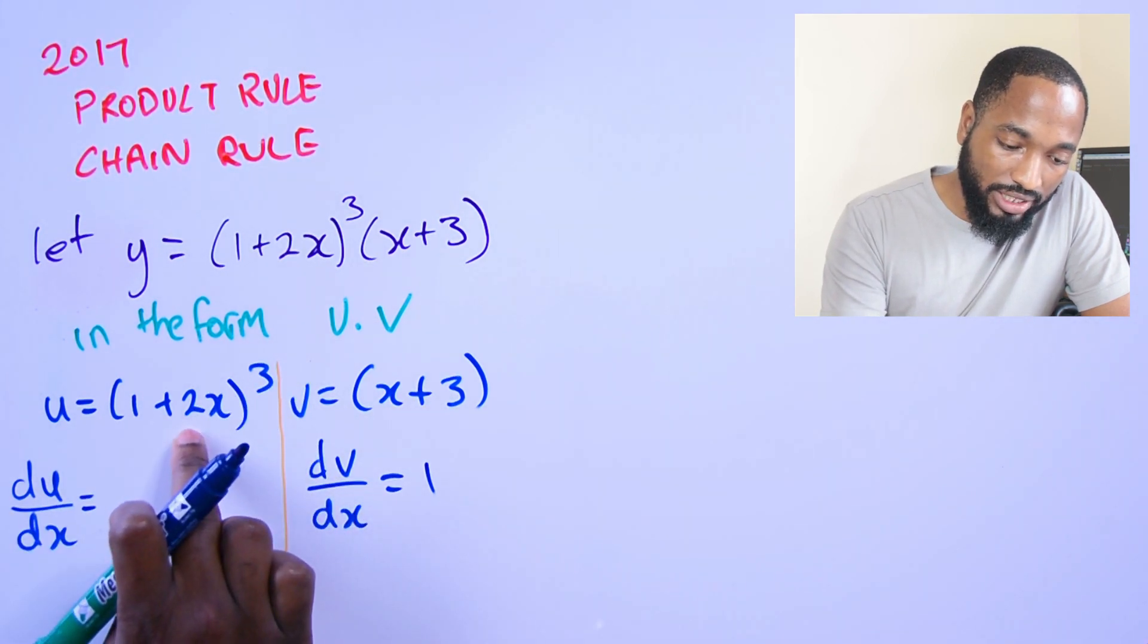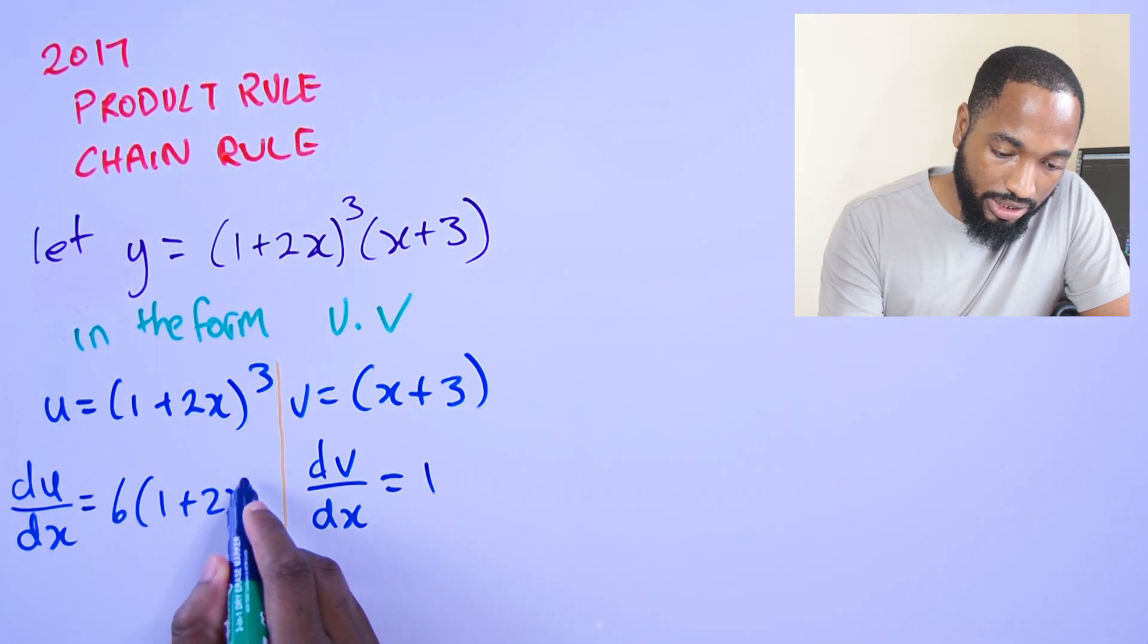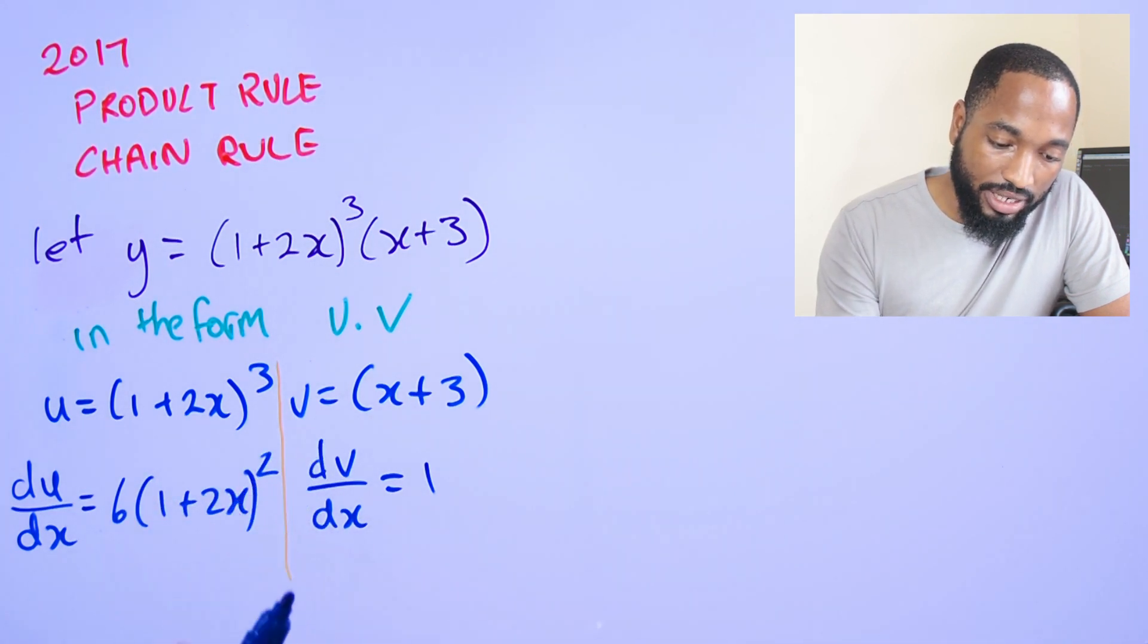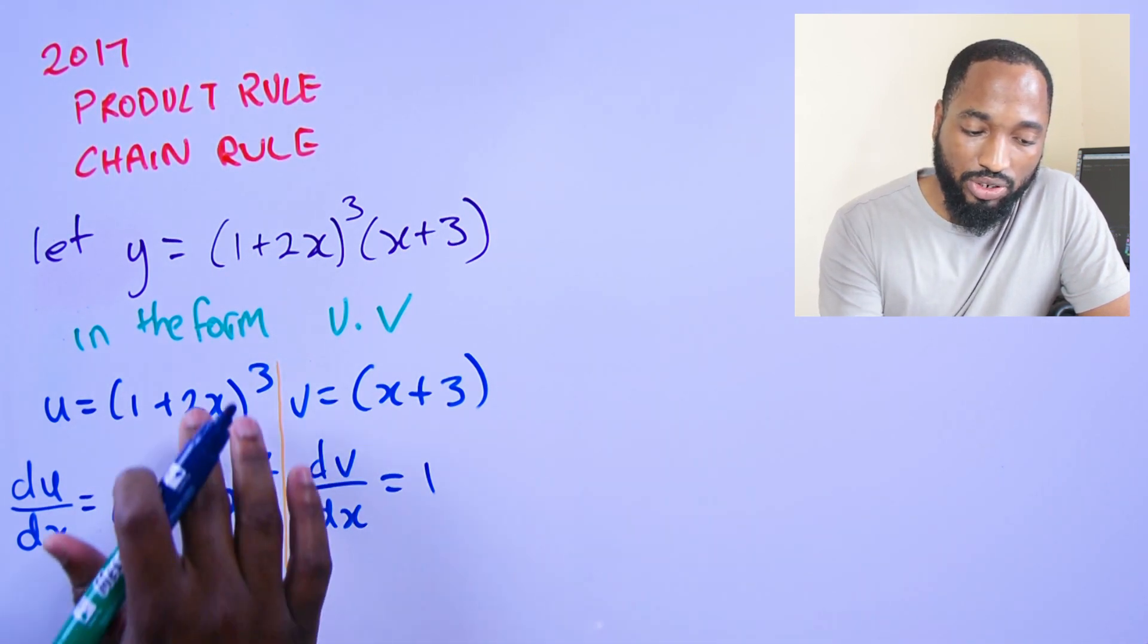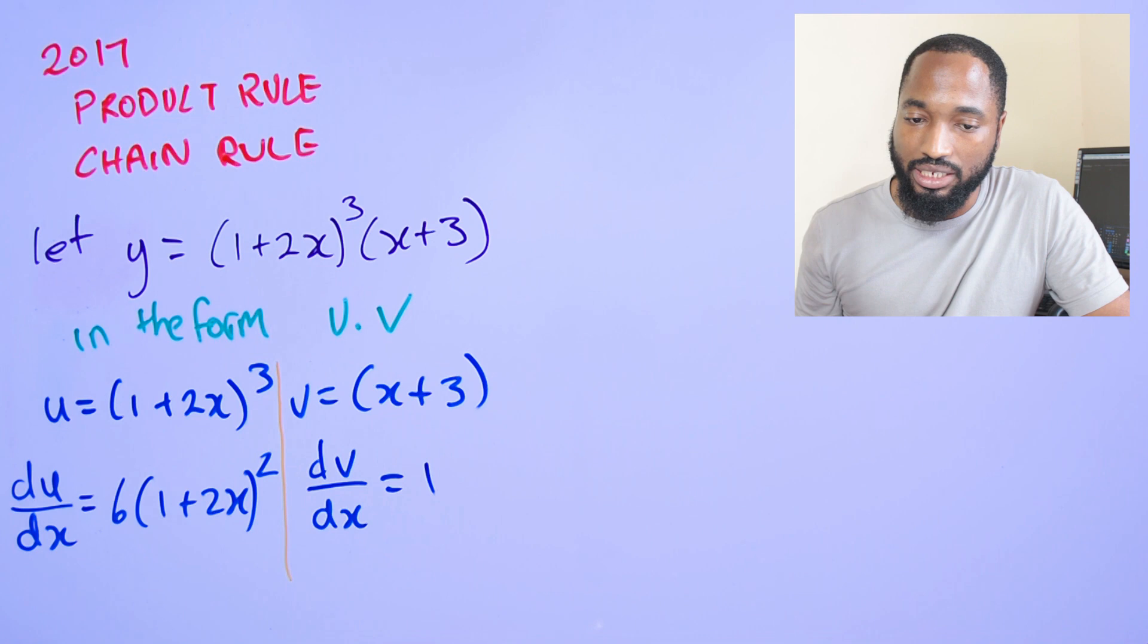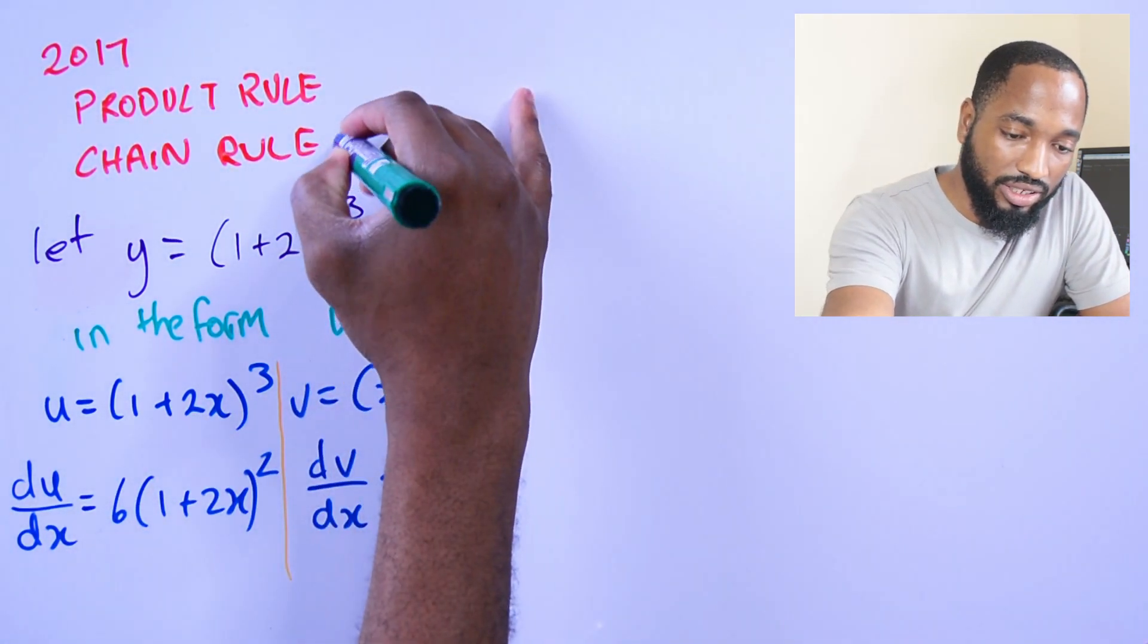I can differentiate this right away as well. This will be equal to 3 times the differential of what is in the brackets, so 6(1 + 2x)² after dropping the index. Now, I don't think you will collect your marks if you do it shortcut like this. You would need to show them how to differentiate this using the chain rule.